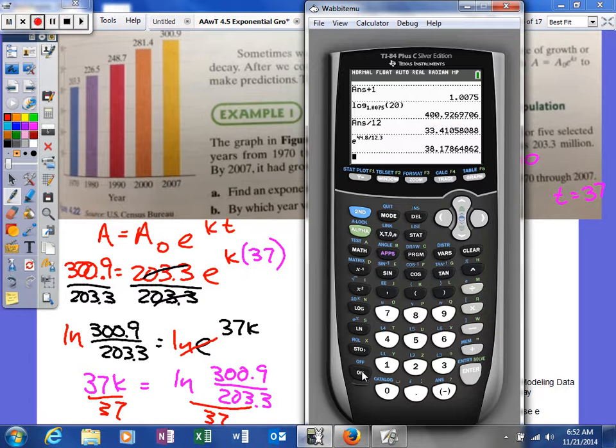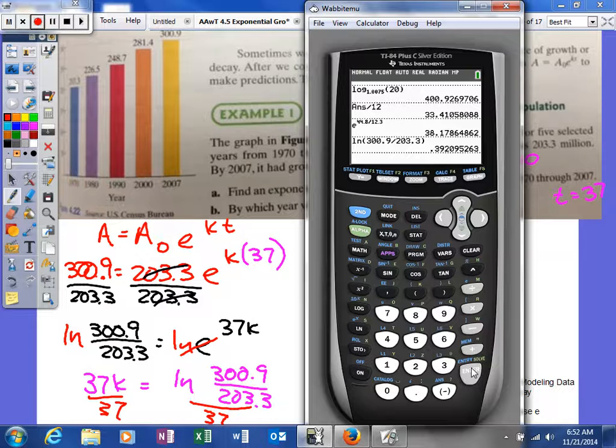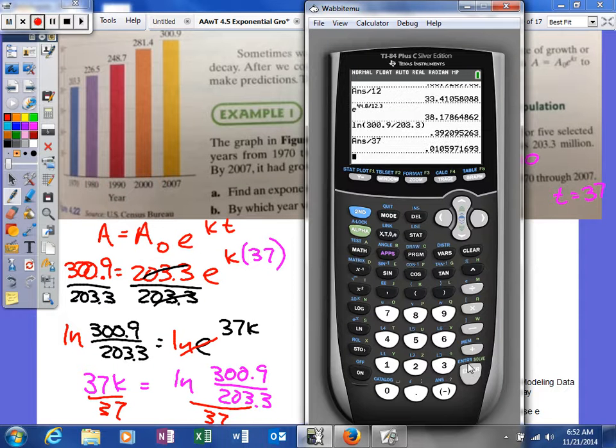Alright. So now it becomes a little calculator problem, so let's see if my bad boy will turn on. Yeah, look at that. So we'll say natural log of 300.9 divided by 203.3, and then we're going to divide that by 37.